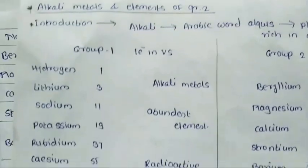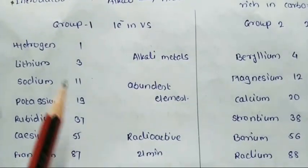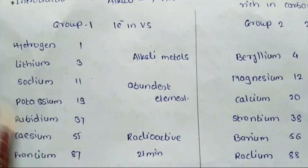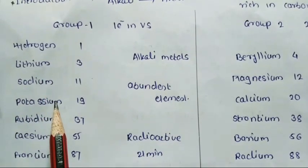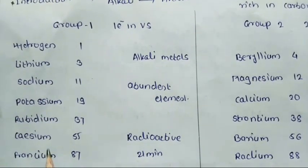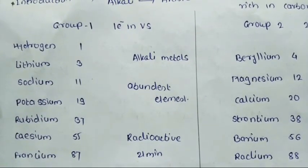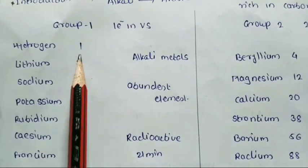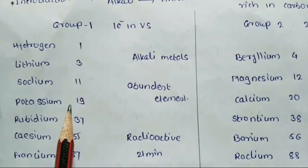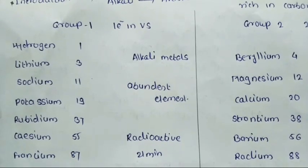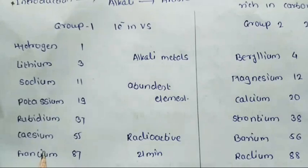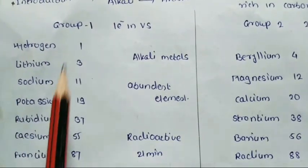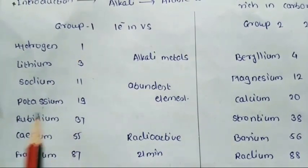First group elements include hydrogen, lithium, sodium, potassium, rubidium, cesium, and francium, with atomic numbers 1, 3, 11, 19, 37, 55, and 87. The atoms of group first elements have one electron in their outermost shell.